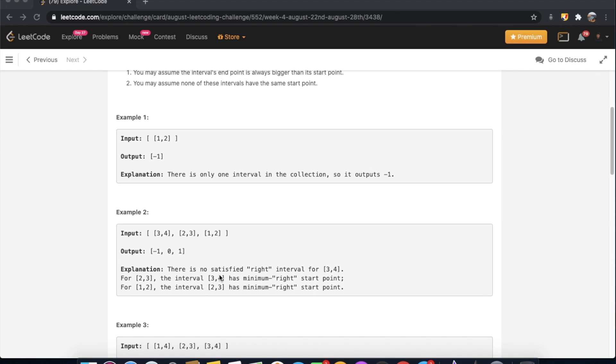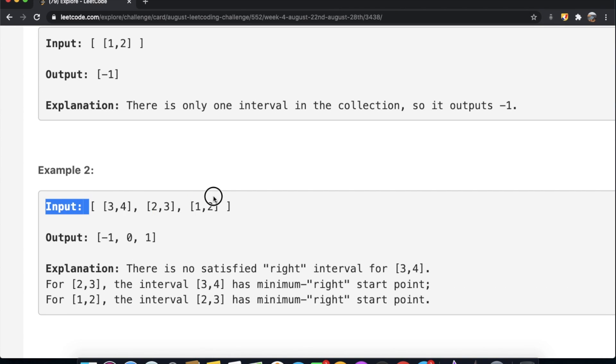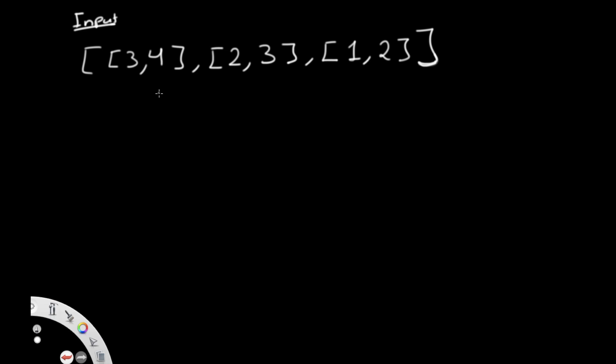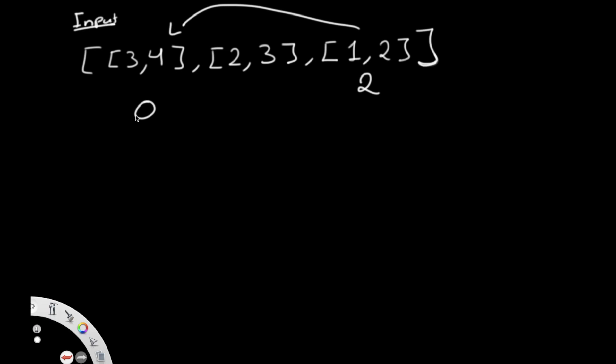Now let's look at how to solve this. Since we're always comparing numbers to find which is bigger, sorting would be a good idea — we sort by the beginning element. However, the problem with sorting is that we lose track of the original index. For example, [1,2] is currently at index 2, but after sorting it moves to index 0, which completely messes up the index.